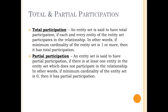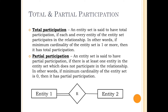Two other terms are also used here: Total Participation and Partial Participation. An entity is said to have total participation if each and every entity of the entity set participates in the relationship. In other words, if the Minimum Cardinality of the entity set is 1 or more, then it has total participation. On the other hand, an entity is said to have partial participation if there is at least one entity in the entity set which does not participate in the relationship — that is, if the Minimum Cardinality is 0. The representation of total and partial participation is shown on the screen. Total participation is denoted by double lines, whereas partial participation is denoted by a single line.